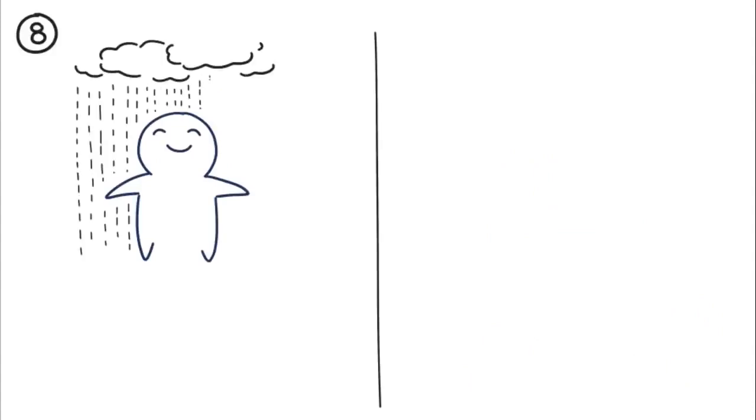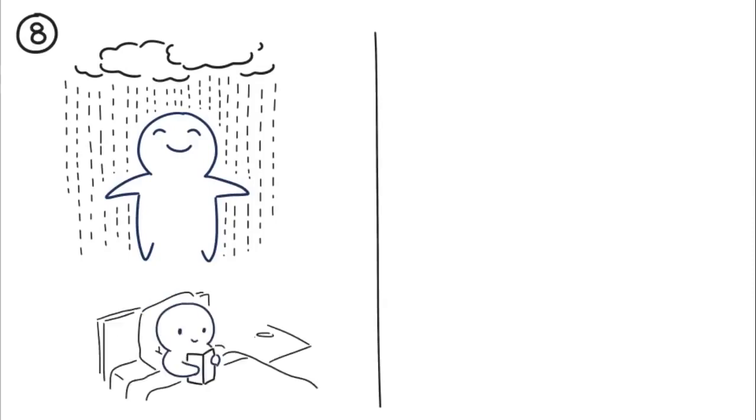Eight, introverts like the rain. Rain creates white noise that attracts introverts because it signals opportunities for solitude. They find the calming effect pleasurable since it allows them to escape within themselves for the time being. Rain helps lower expectations for the day as well and isn't as overstimulating as the sun.